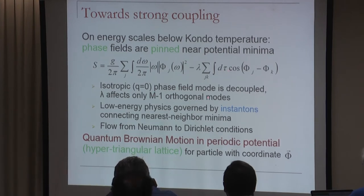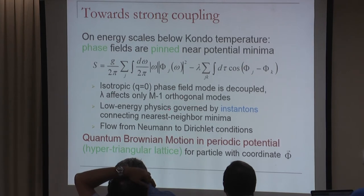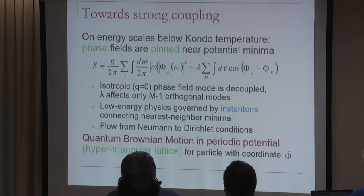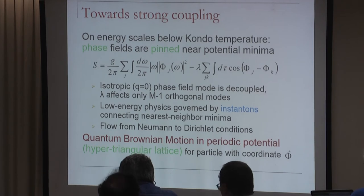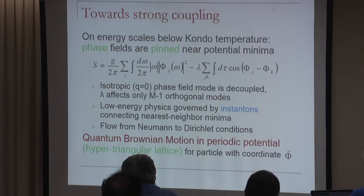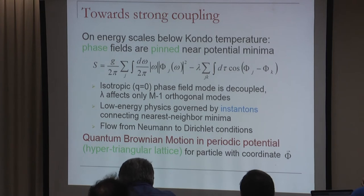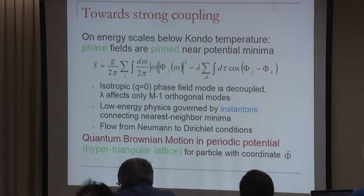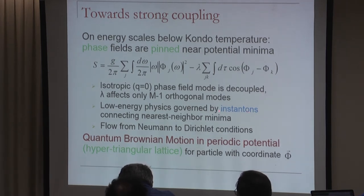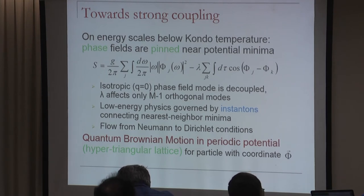For these M-1 modes, there is a flow from Neumann to Dirichlet boundary conditions. At low energy near the ground state, these modes are pinned, while the dual charge fields (theta fields) obey Neumann conditions. The dominant low-energy processes—technically the leading irrelevant operators—are instanton transitions between nearest-neighbor minima of the periodic potential. By evaluating these instantons one identifies the leading processes around the ground state.